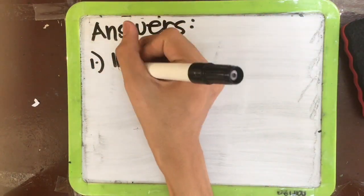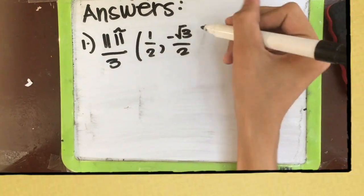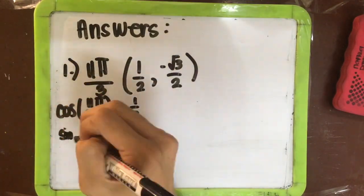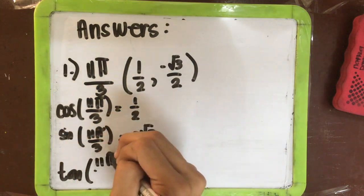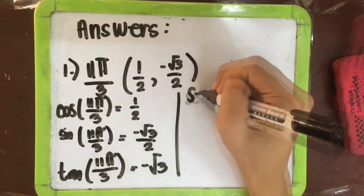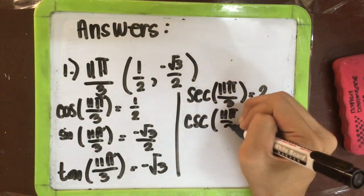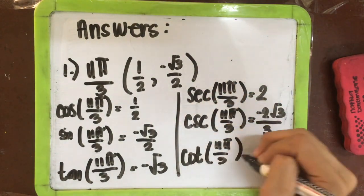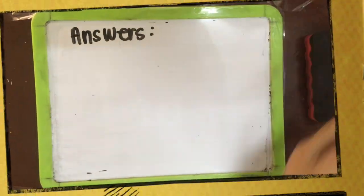For 11π over 3, the coordinates are (1/2, −√3/2). Cosine equals 1/2, sine equals −√3/2, tangent equals −√3, secant equals 2, cosecant equals −2√3 over 3, and cotangent equals −√3 over 3.